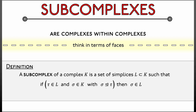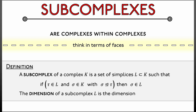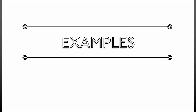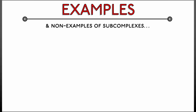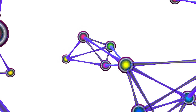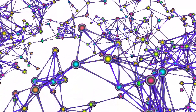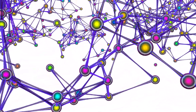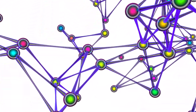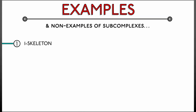Such a subcomplex has a dimension, just like the complex in which it sits. The dimension of a subcomplex L is precisely the dimension of L thought of as a simplicial complex in and of itself. For example, the one-skeleton of a complex consists of all the vertices and all the edges — that's it. It is the graph on which the higher-dimensional simplices sit, and it is in fact a subcomplex because all the vertices are included as boundary faces of the edges.